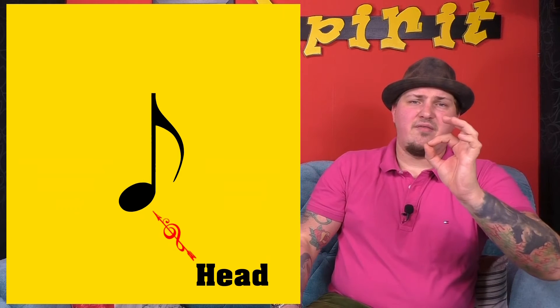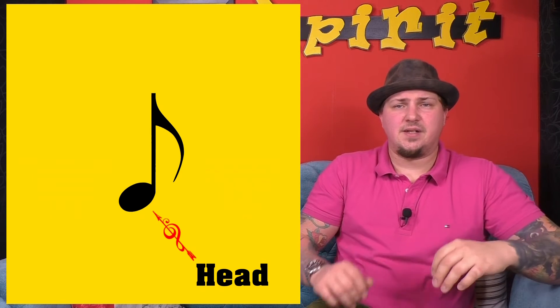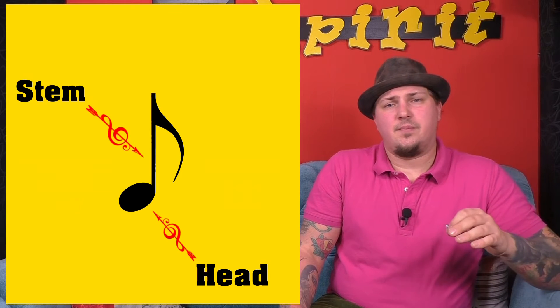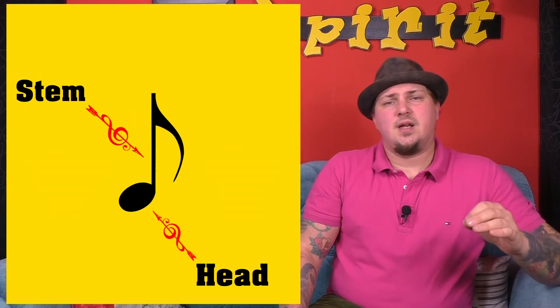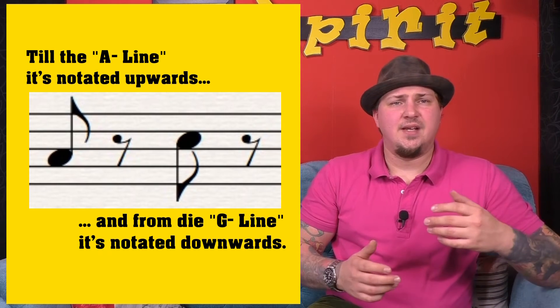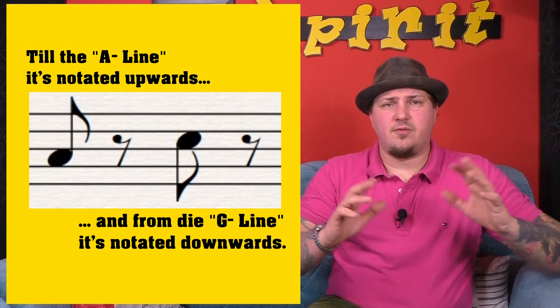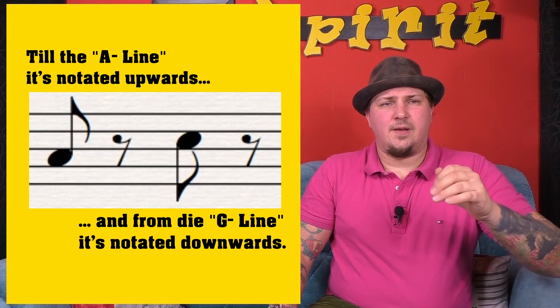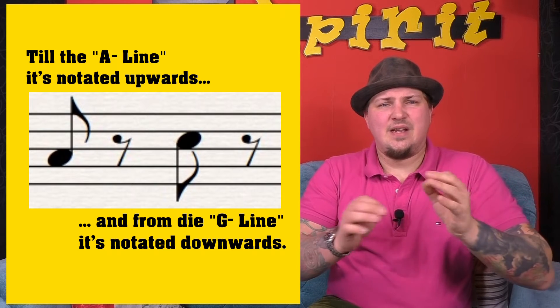Let's take a further look at the notes and their value. Every note has a head — it's the big thing — it can be black filled or it can be white filled. This is the note head. Then some notes have a stem. The stem can be notated upwards or downwards. The direction doesn't affect how to play the note, but it makes it easier to read if they are written neatly within the measure.